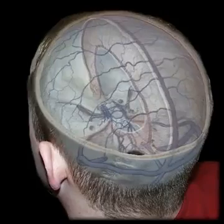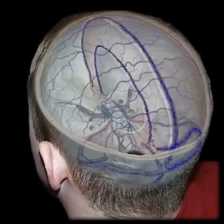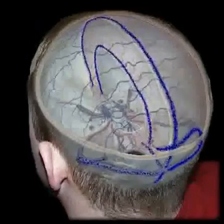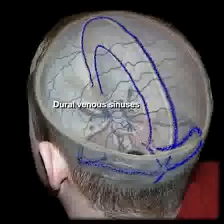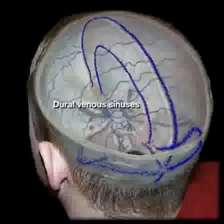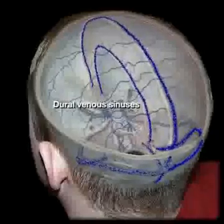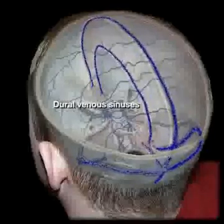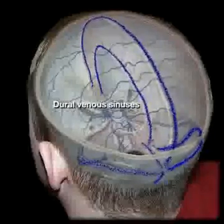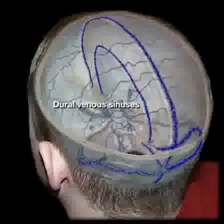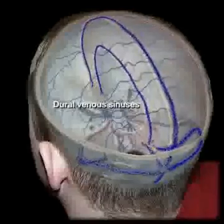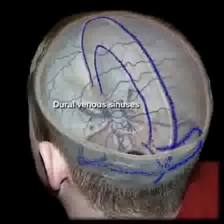Venous blood from the brain drains into a system of valveless channels called dural venous sinuses. These sinuses are located at the margins of dural folds where the periosteal and meningeal layers of dura mater separate.